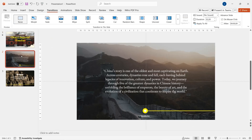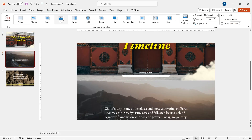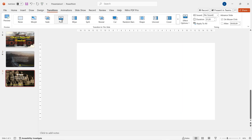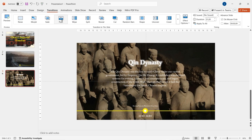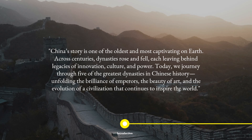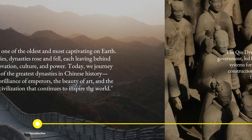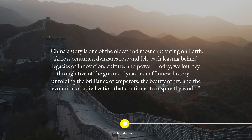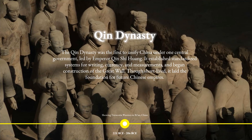We just need to make sure the direction is suitable for the yellow line to move seamlessly. For example, in slide 3, instead of using the default 'from bottom' direction, I change it to 'from right' so that the yellow rectangle moves seamlessly from one slide to another. You can use this principle for every slide to create a good presentation with push transition.